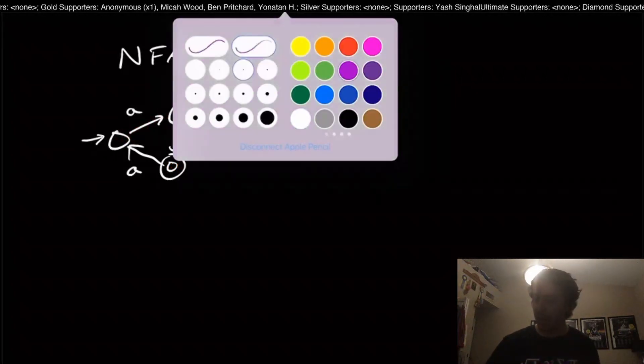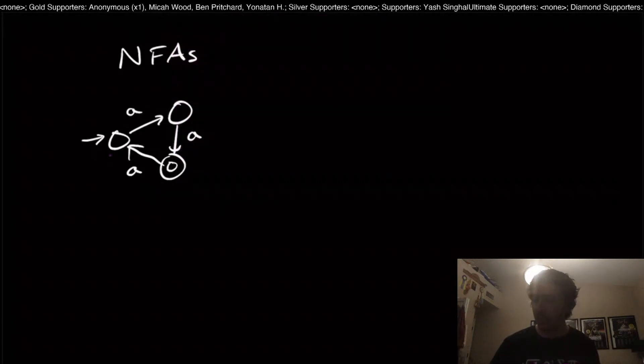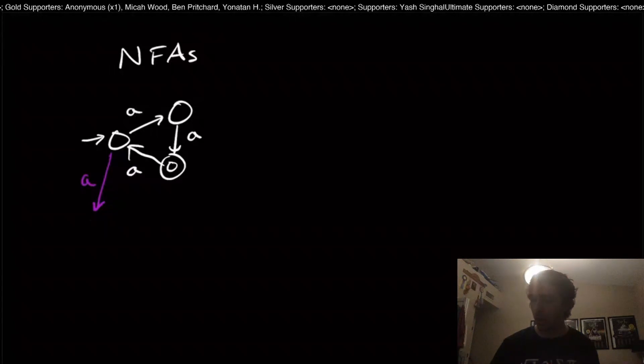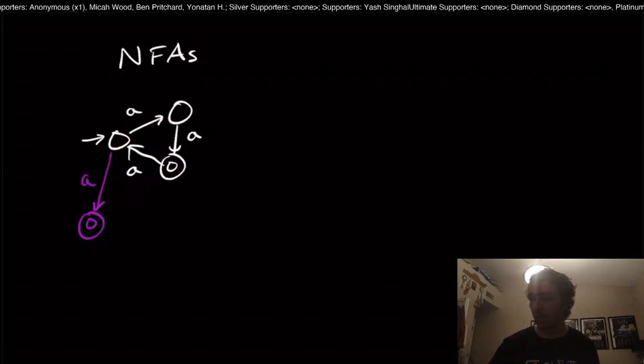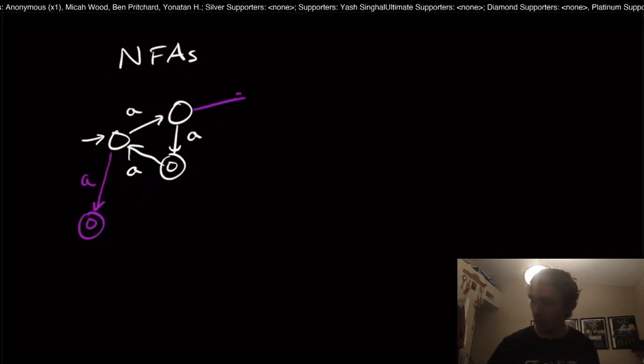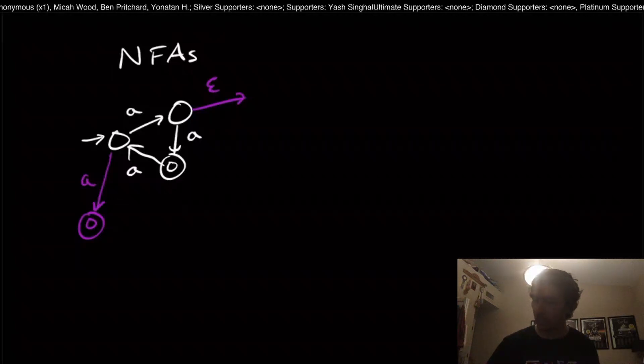So what is an NFA? An NFA allows us to have additional transitions on a particular state. So here we're having two transitions on the input A going here and over here. We can also have what are called epsilon transitions going to a state like this one.